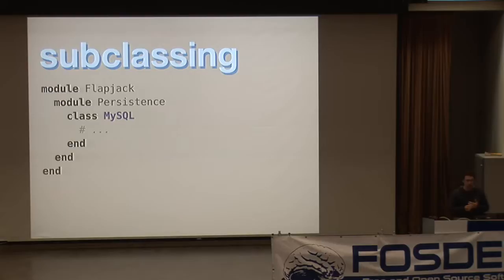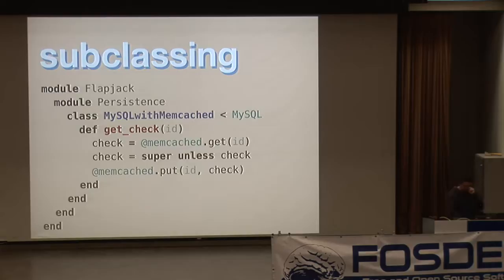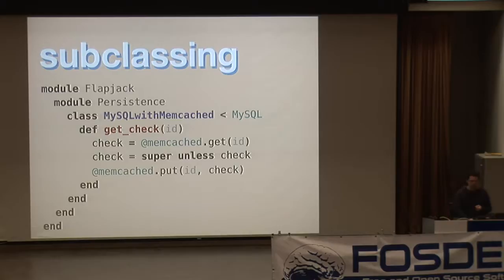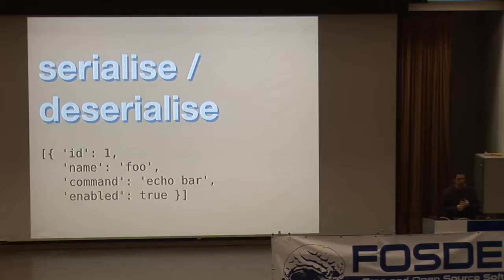The persistence API gives you advantages like subclassing. Say hypothetically you have a MySQL backend and you find there are particular workloads you need to optimize. You can subclass the MySQL backend, call it a MySQL-with-Memcache backend, and override the get_check method to call Memcache first. If we don't get something back from Memcache, we just call the original get_check method on the MySQL class to do the database lookup, then store the result in Memcache so the next time somebody needs that particular check they can get it out of Memcache.